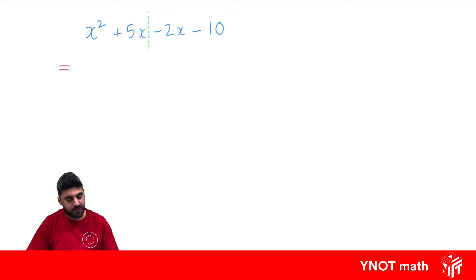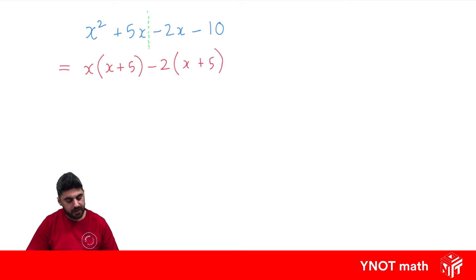Out of x squared and 5x we can take x out, and that'll leave us with x plus 5. Then in minus 2x and minus 10, I can take out minus 2 and that'll leave us with x plus 5. Now we end up with two terms, and there's a common factor between those two terms — x plus 5 is common in both, so we're going to pull that out as a common factor.